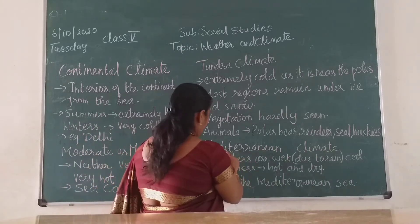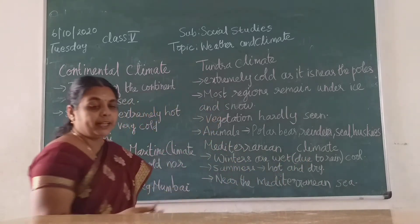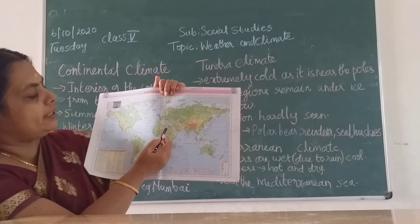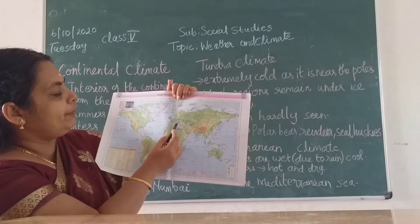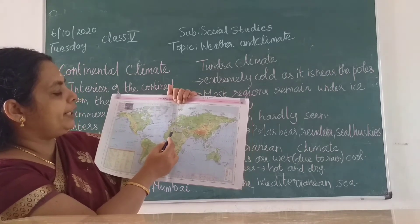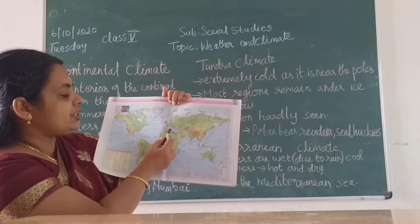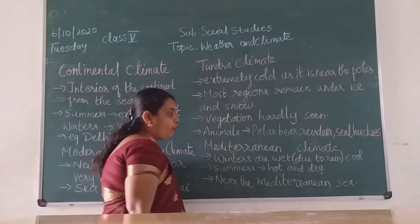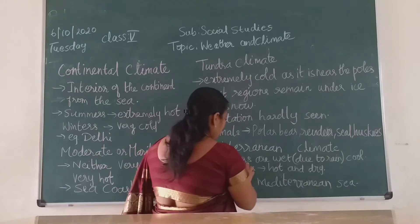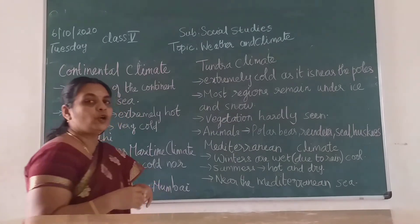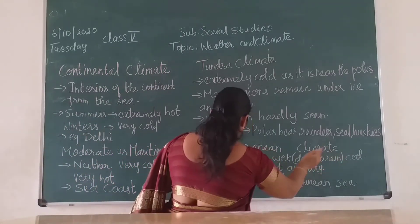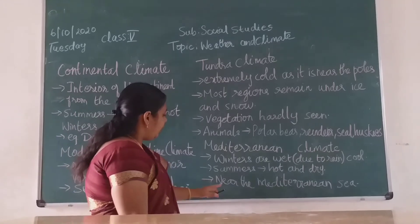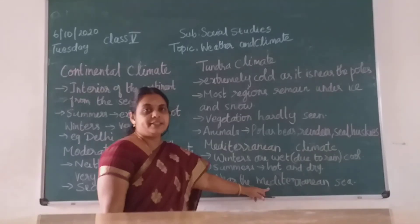The last one is Mediterranean climate. In the world map, between Europe and Africa you have the Mediterranean Sea. The regions around this Mediterranean Sea have this type of climate. Winters are wet due to rain because it is near the seaside, giving it a cool climate. Summers are hot and dry. It is the region located near the Mediterranean Sea.